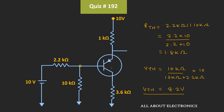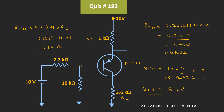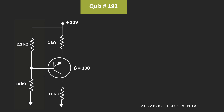For this voltage divider biasing configuration, if the Thevenin's equivalent resistance is much less than (β + 1) times the emitter resistance, then we can use the approximate analysis. Here, the emitter resistor and the collector resistor are identified, and β is given as 100. So (β + 1) × Re equals 101 × 1 kΩ = 101 kΩ. Since this is much higher than the Thevenin's equivalent resistance of 1.8 kΩ, we can use the approximate analysis.